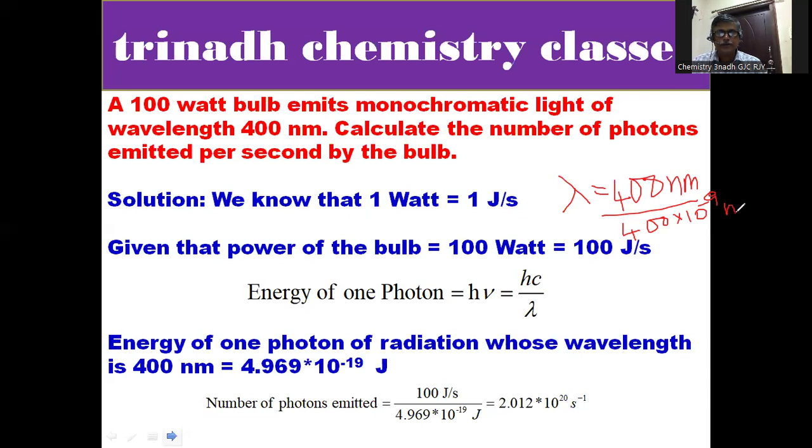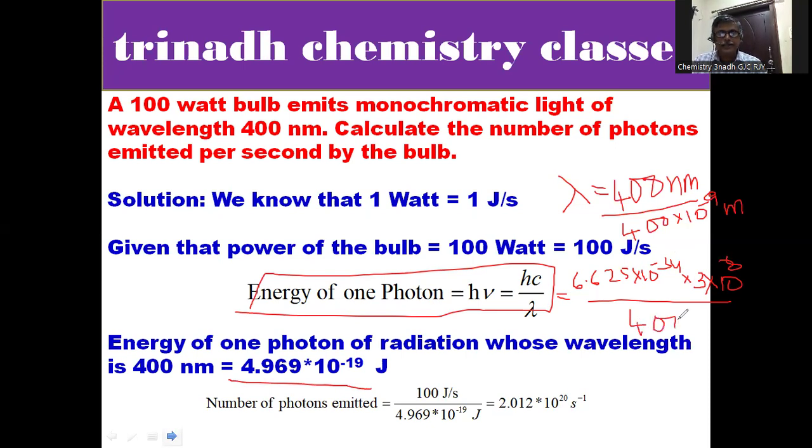The energy of 1 photon is given by Planck's equation E = hν = hc/λ, where H is Planck's constant and C is the velocity of light. H value is 6.625 times 10 to the power of minus 34 joule seconds, and C value is 3 times 10 to the power of 8 meters per second. Substituting these values, the energy of one photon of radiation whose wavelength is 400 nanometers is 4.969 times 10 to the power of minus 19 joules.